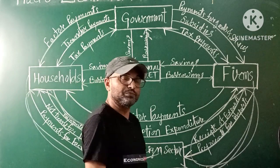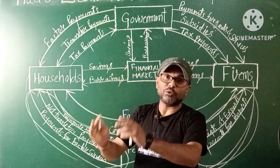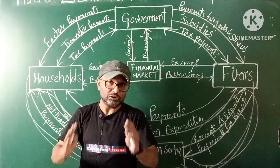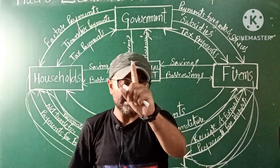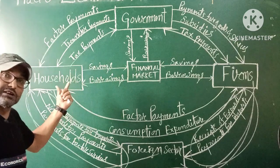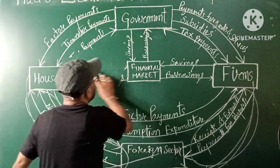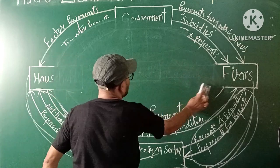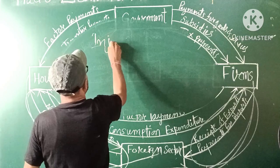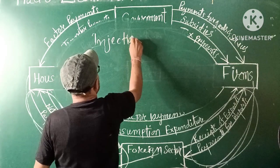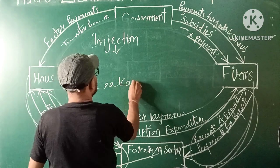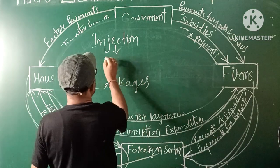Now I will add the concept of leakages and injections to the household and foreign sector relationship. This concept covers both leakages and injections in the four-sector circular flow.